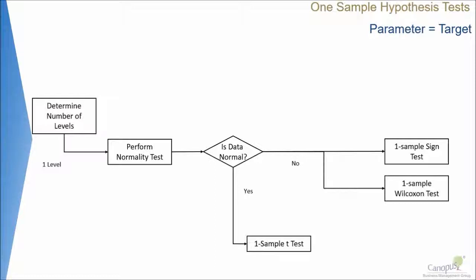If the data is normal we would do a one sample t-test. If it is not, then we have to decide between the two tests that you see: a one sample sign test and a one sample Wilcoxon test. Between these two we have to decide which test we have to start.